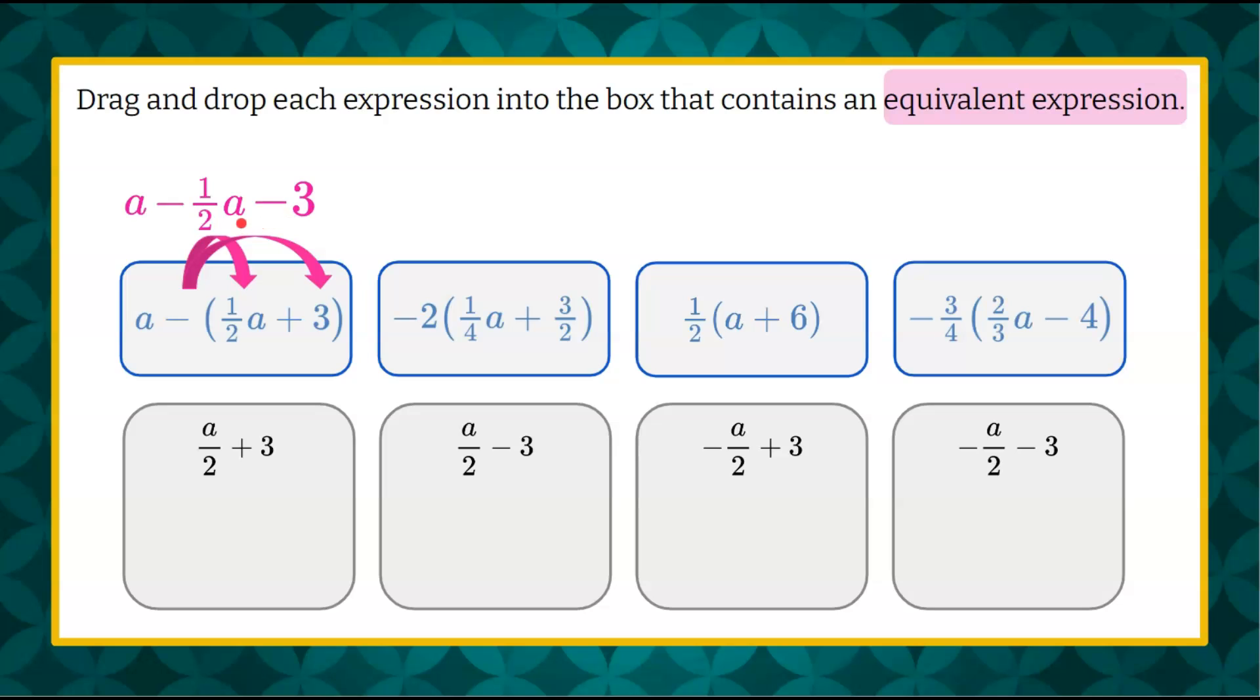So we're not done because we have two like terms here. a and negative 1 half a are like terms and can be subtracted. Understanding that a is 1 a. 1 subtract 1 half is 1 half a. Okay, subtract our 3, and now we have this in simplest form.